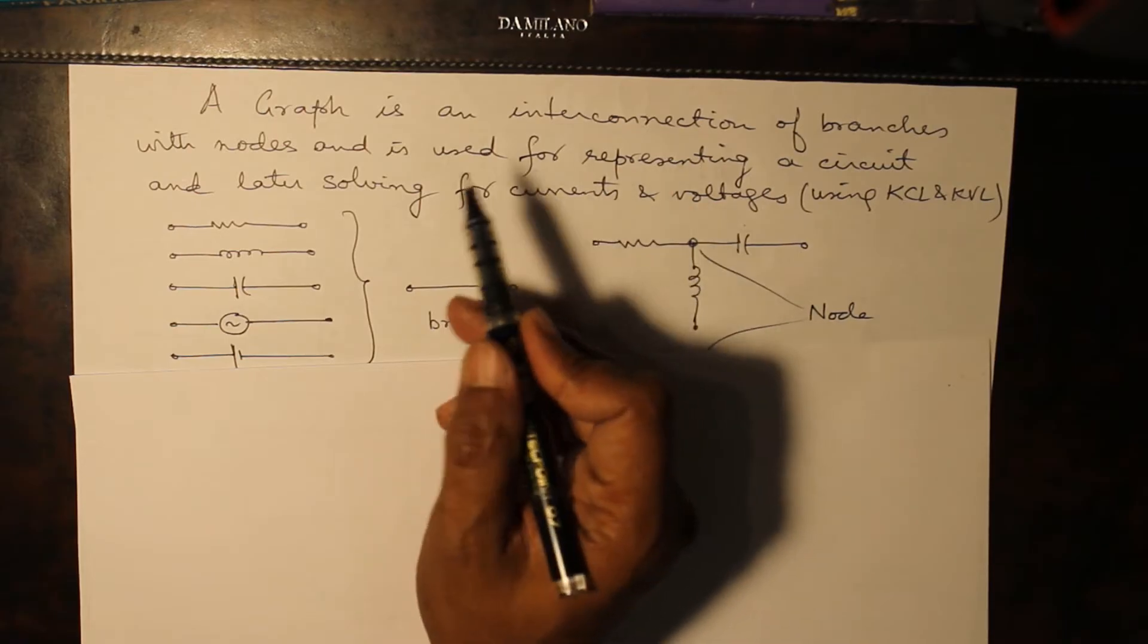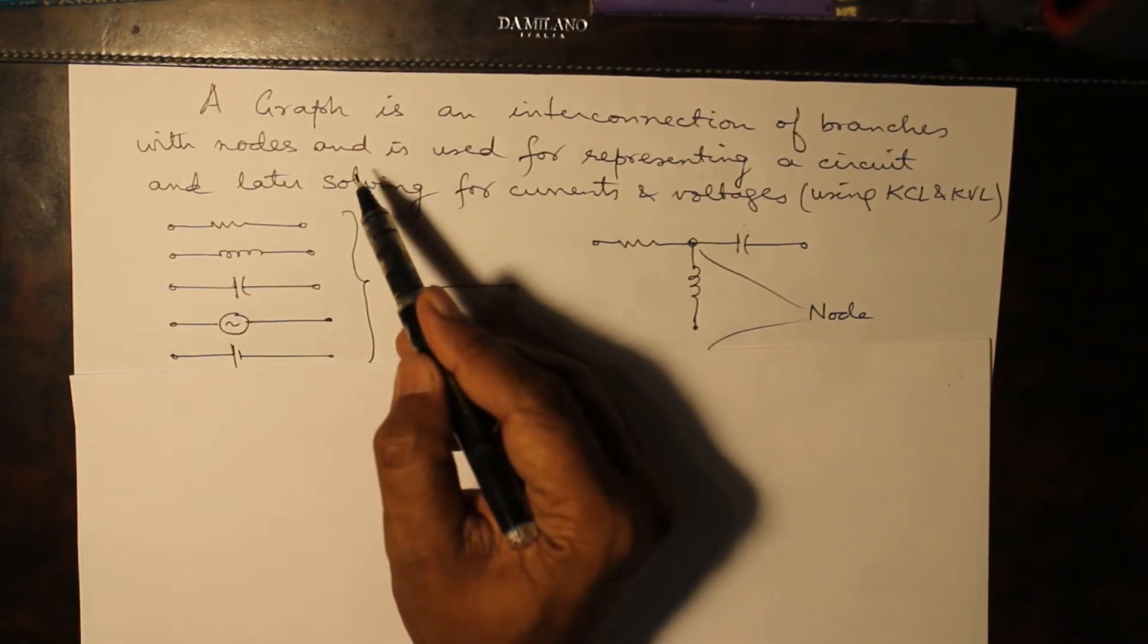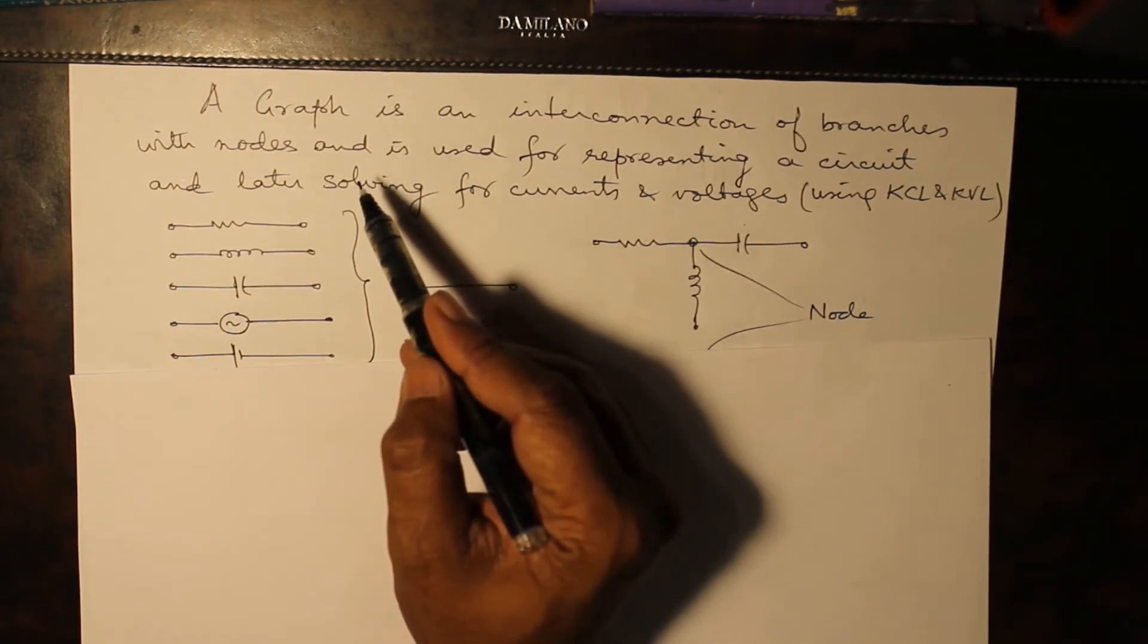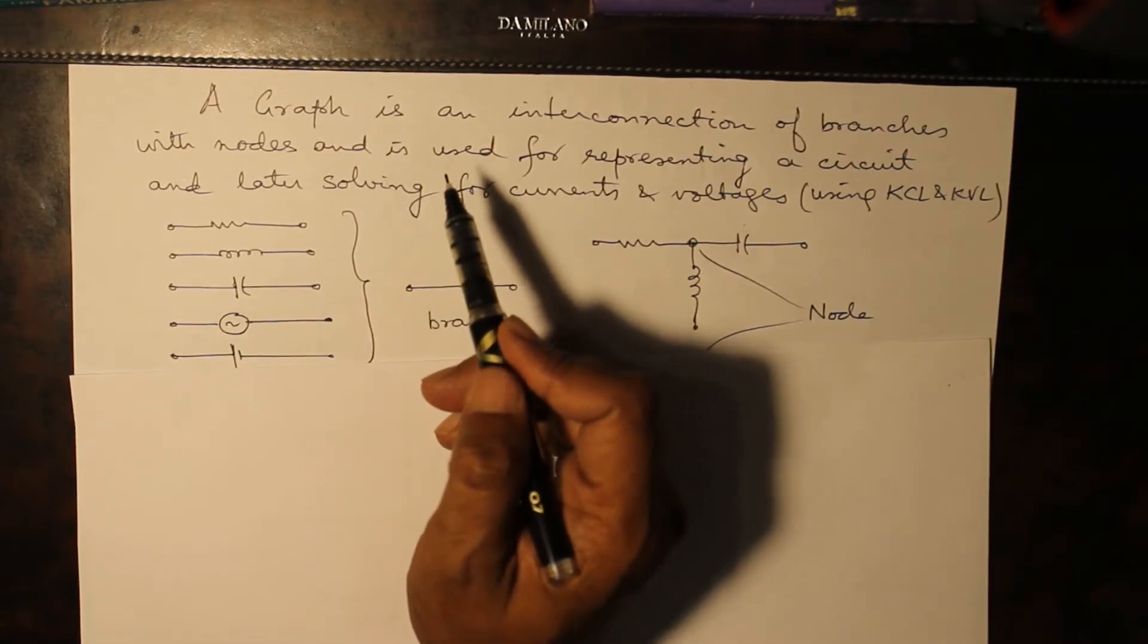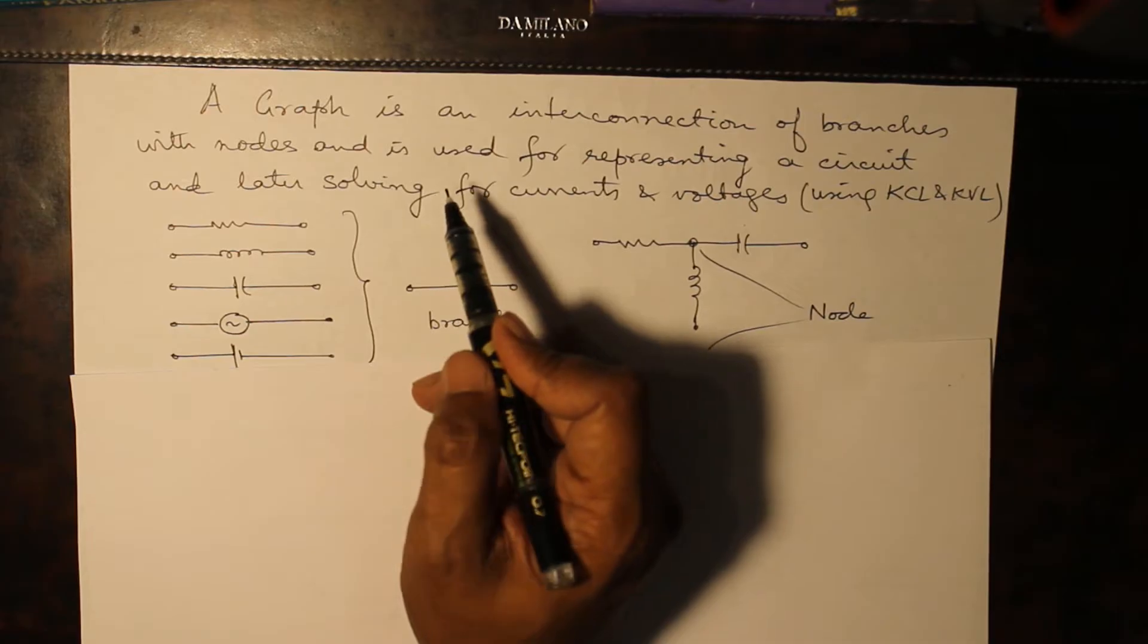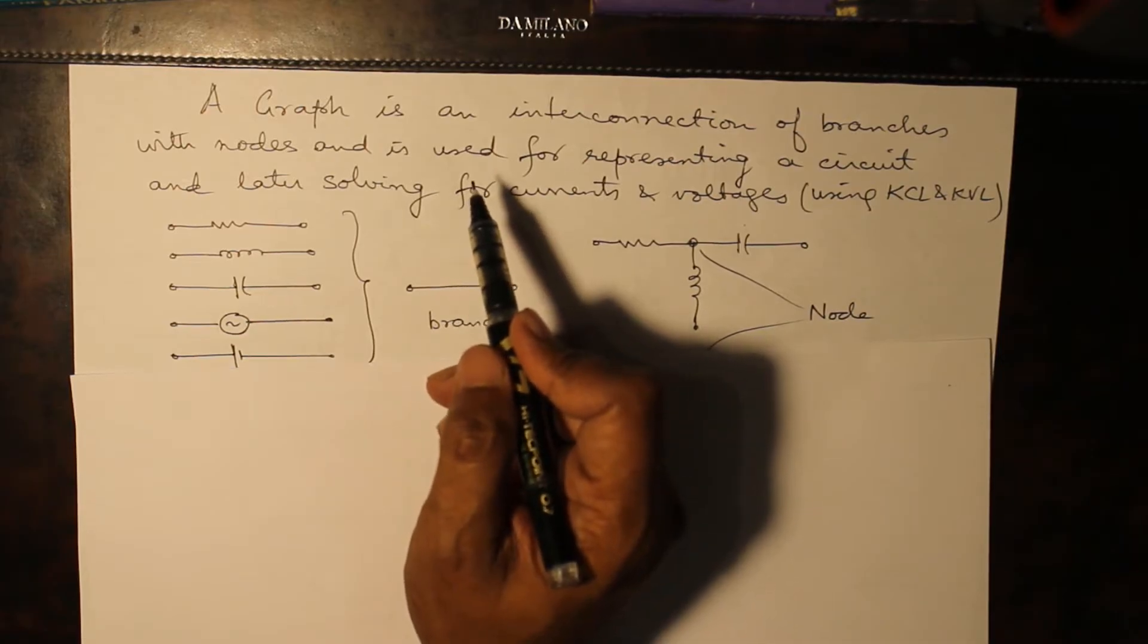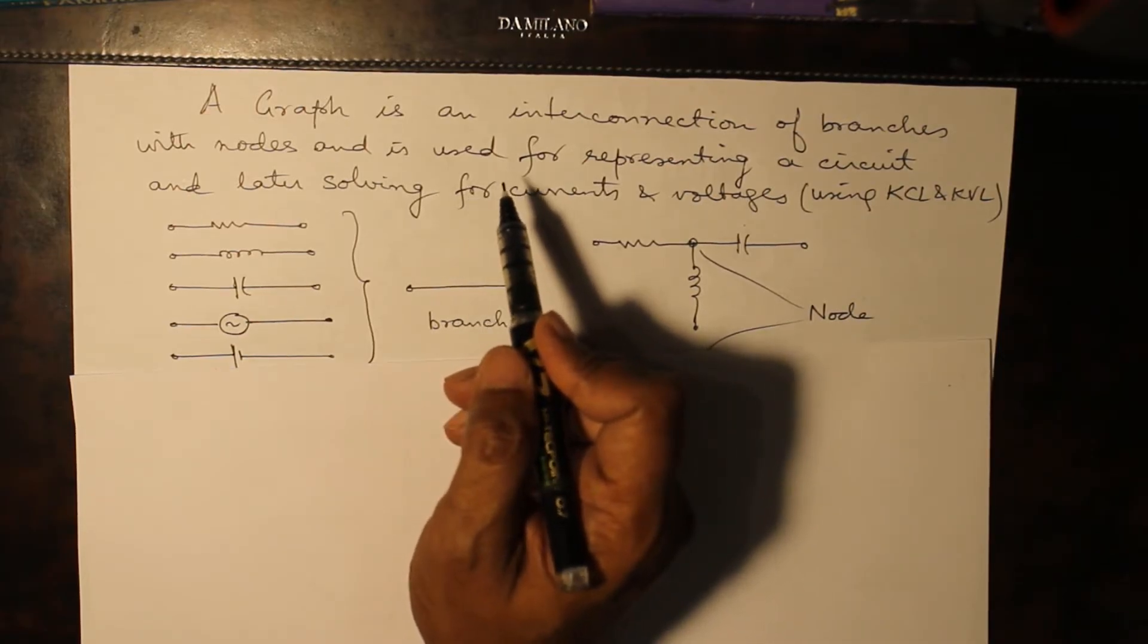So basically graph theory deals with interconnection of branches and nodes. Now we will see what is a node and how do we consider a particular element as a branch or which element is not to be considered as a branch.